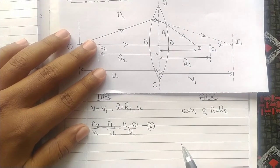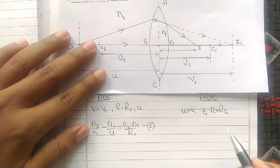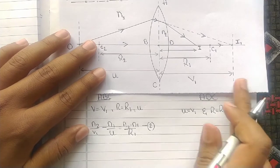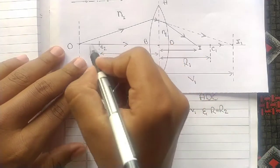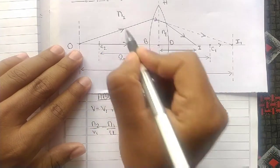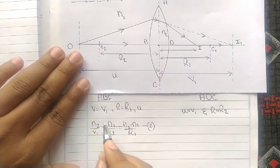So our object in ADC is V1 and R equals R2, because it represents Case 2. Now, in Case 1, the ray passes from N1, the rarer medium, to N2, the denser medium.